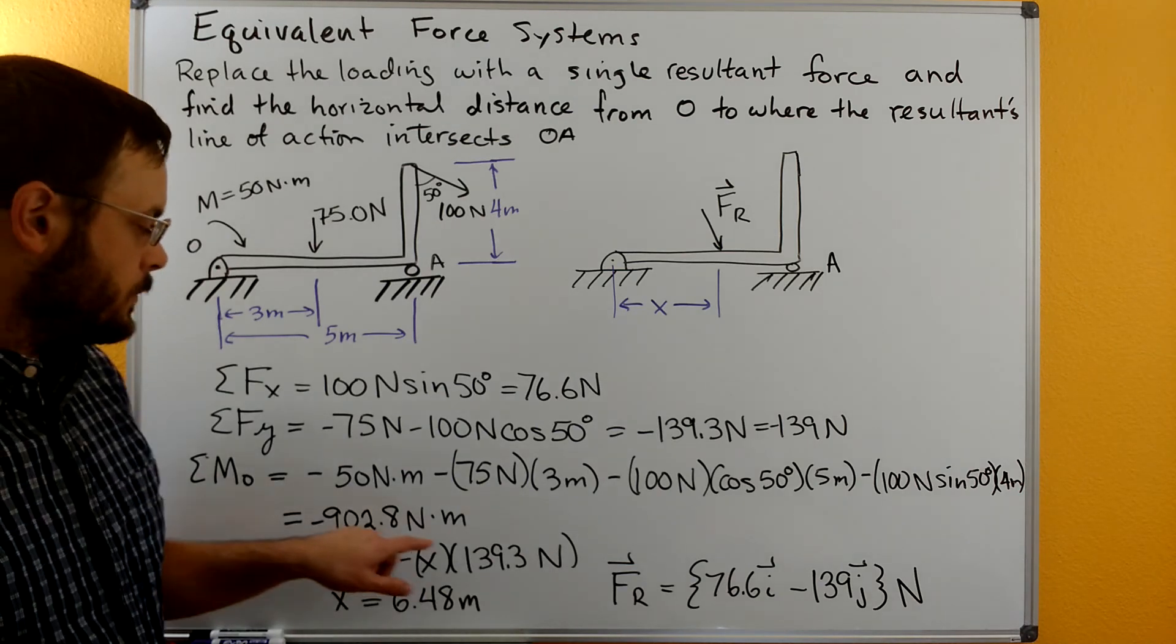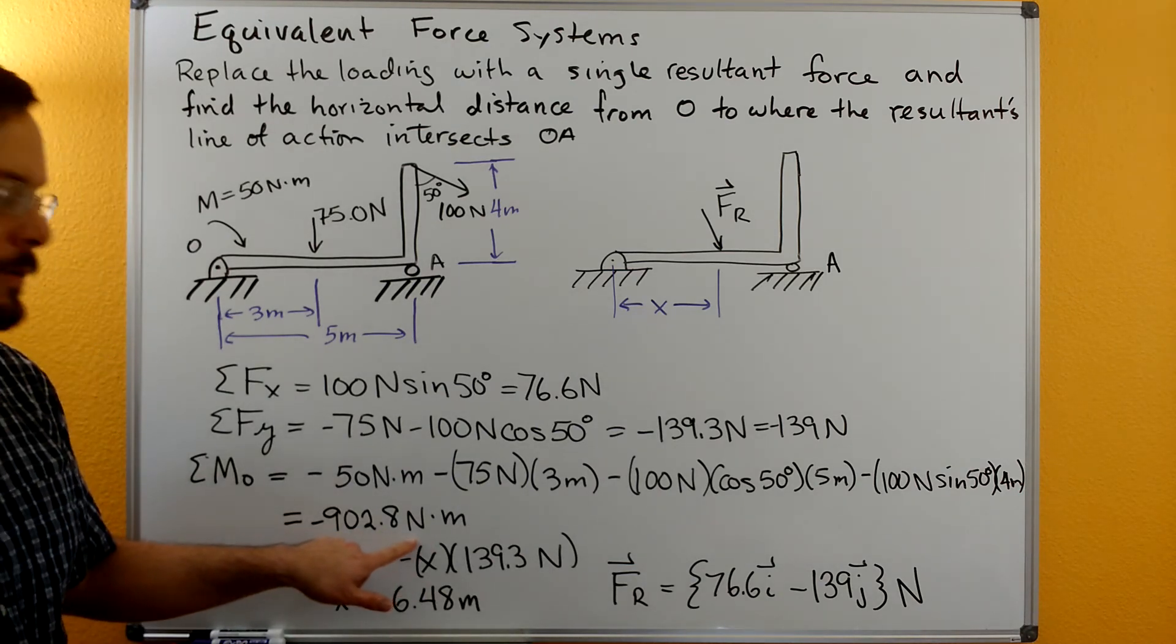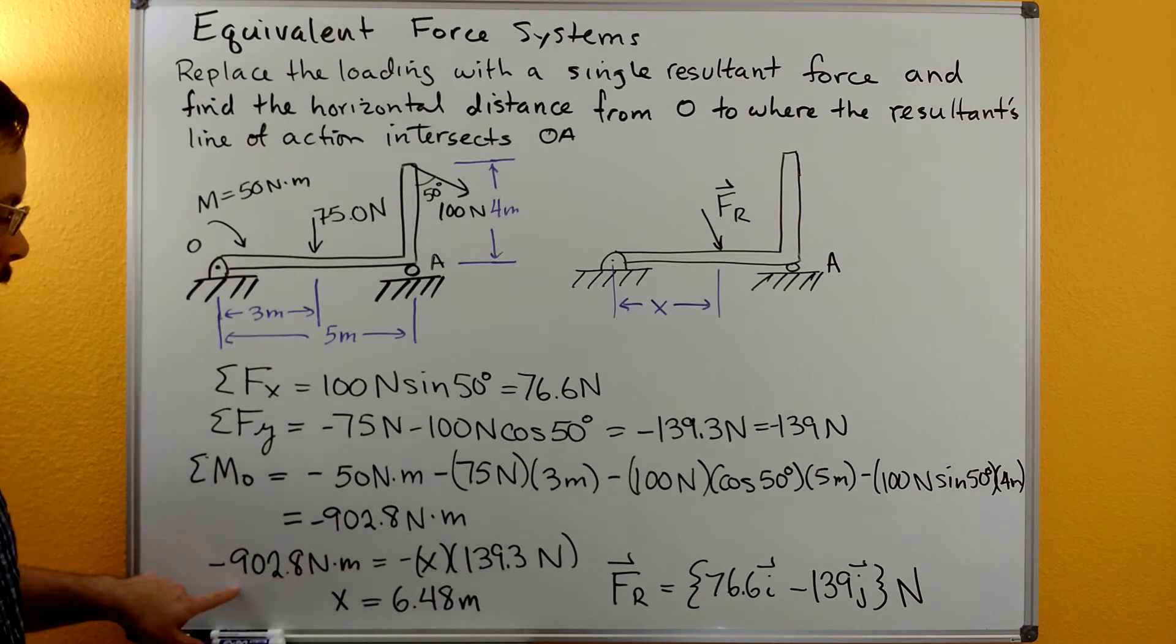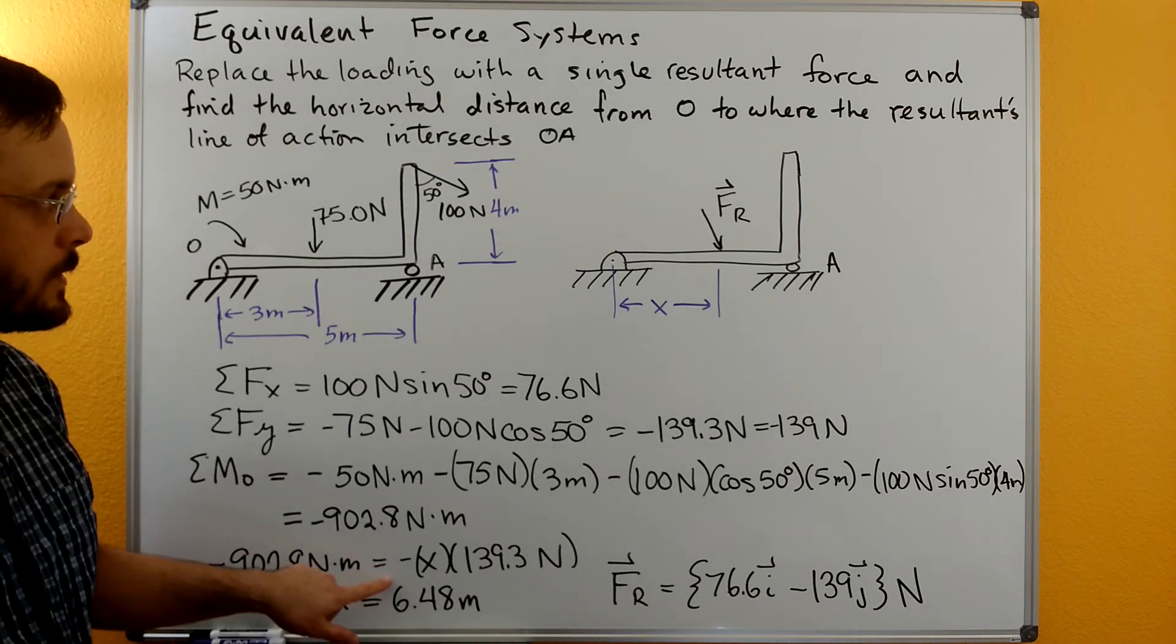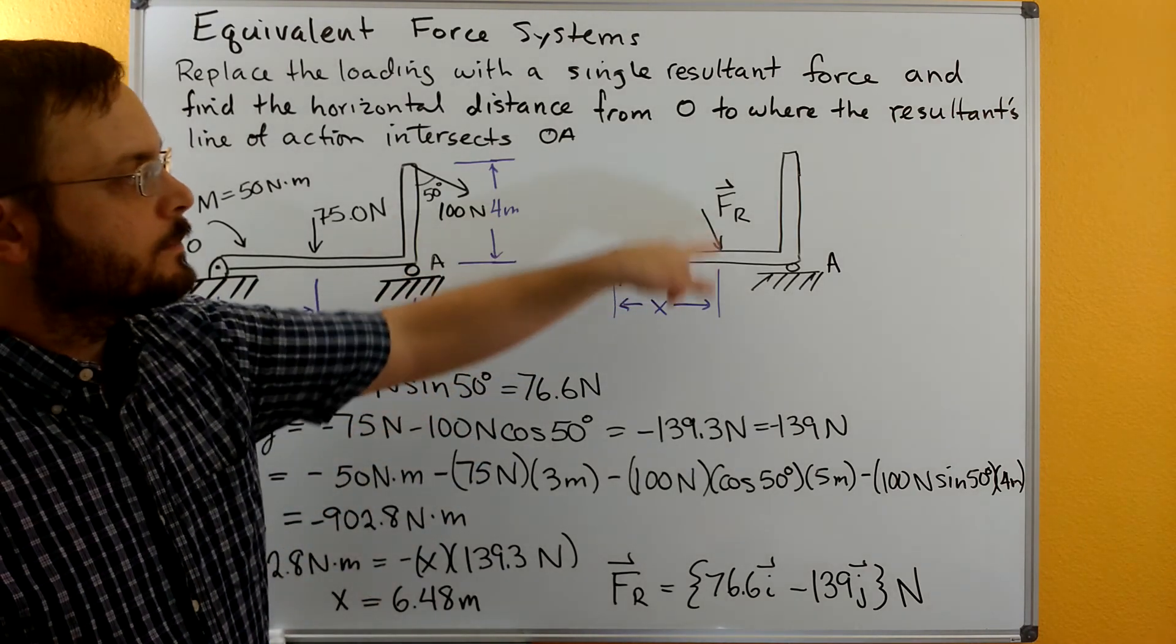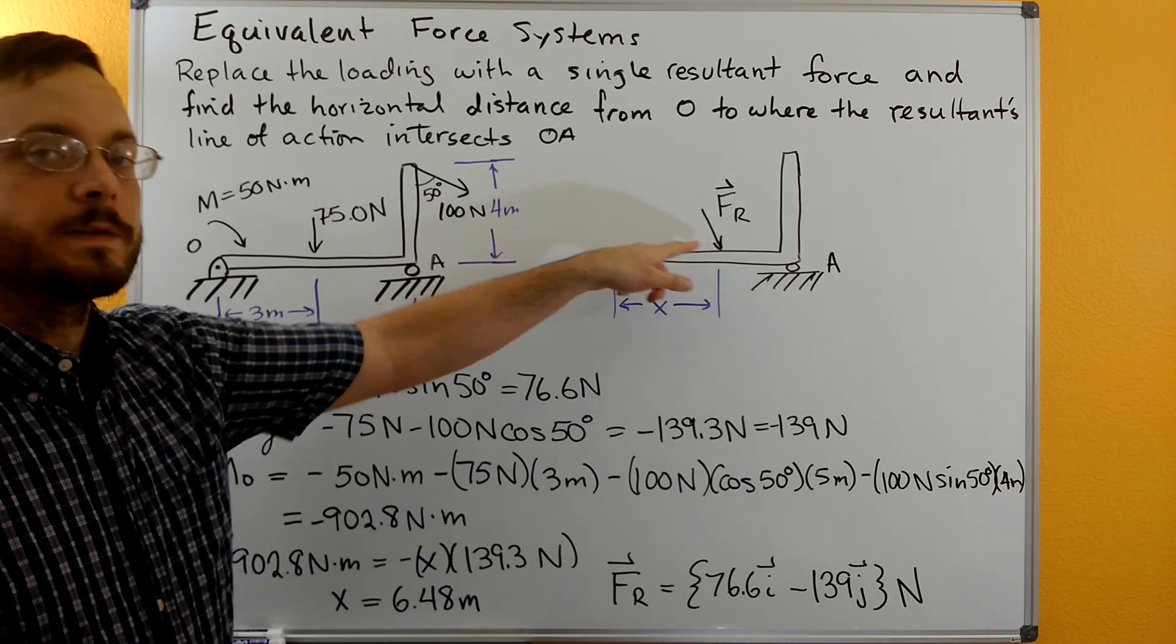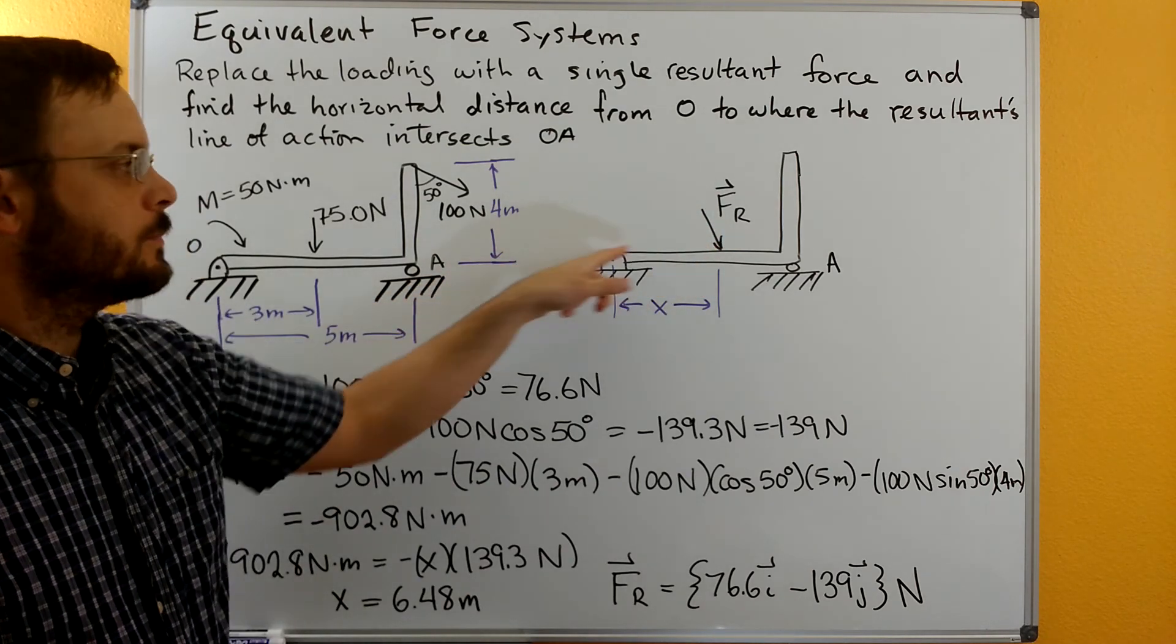Summing it all up, we get negative 903 Newton meters, and then we're going to say that negative 903 Newton meters is going to be equal to the Y component of FR, because the X component is going to go through point O over here.